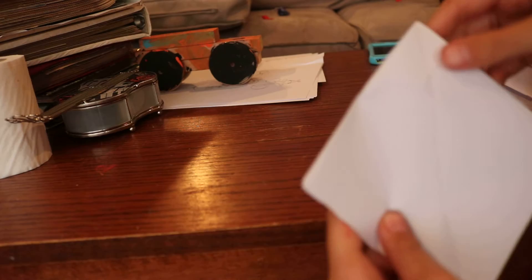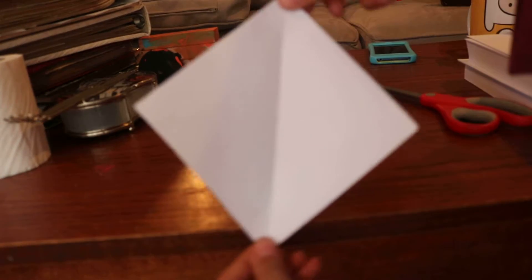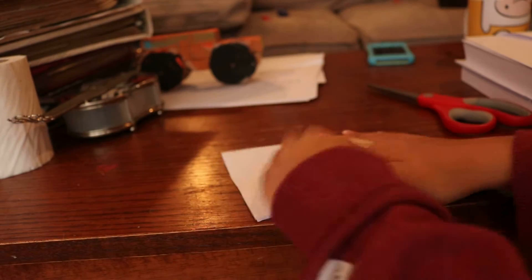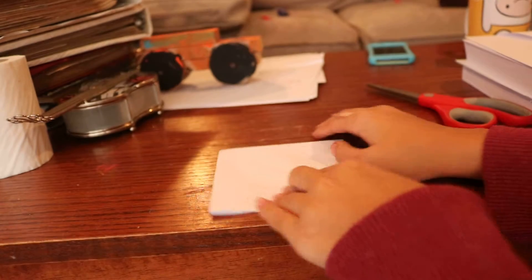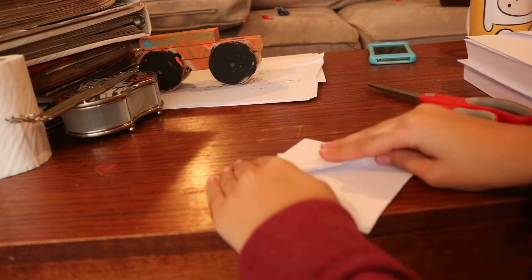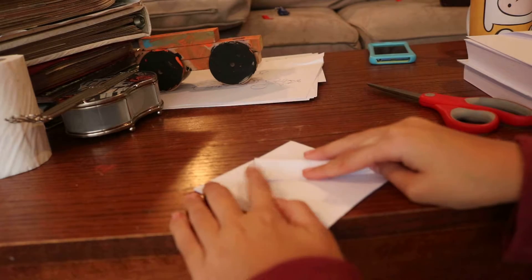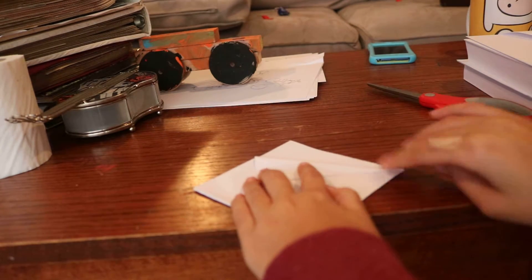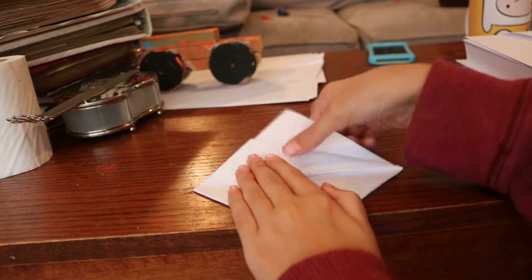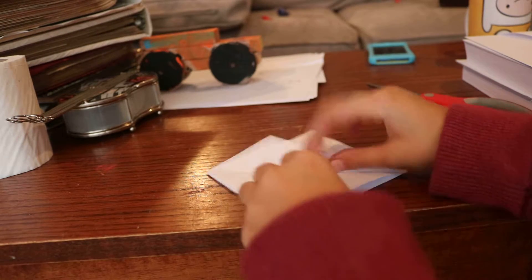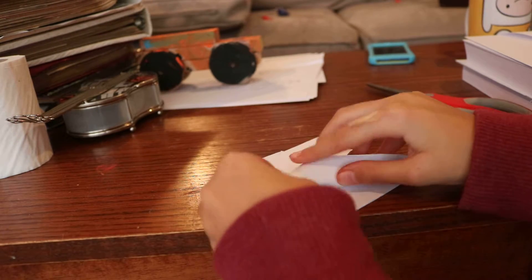Then it'll look like a square. Once you're done doing that, pull it like this, pull it like that, and do the same thing with the other side.